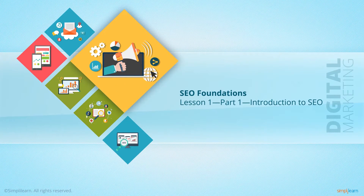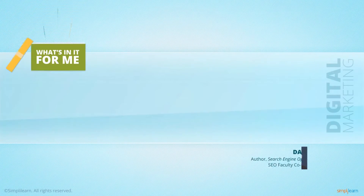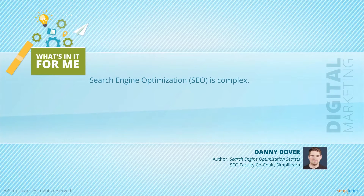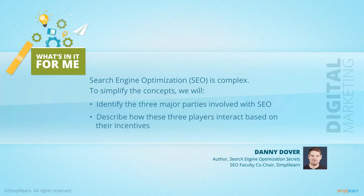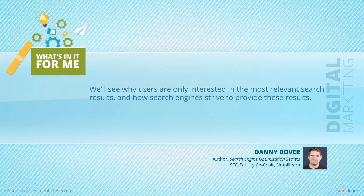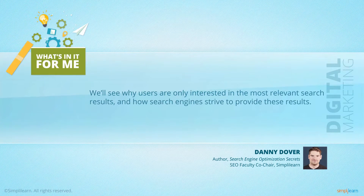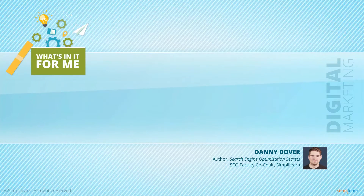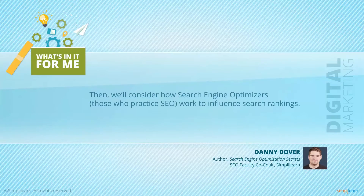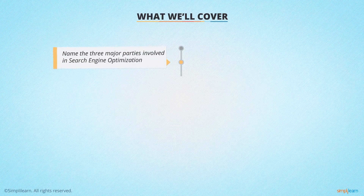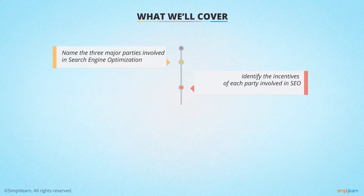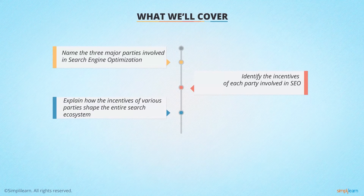Welcome to SEO Foundations. Let's be clear from the start — search engine optimization is very complex. To simplify this dizzying array of concepts, we will be identifying the three major parties involved with search engine optimization and describing how these three players interact with each other based on their incentives. We will see why users are only interested in the most relevant search results and how search engines strive to provide these results. Then we will consider how search engine optimizers — those who practice SEO — work to influence search rankings. By the end, you should be able to name the three major parties involved in SEO, identify the incentives of each party, and explain how those incentives shape the entire search ecosystem.